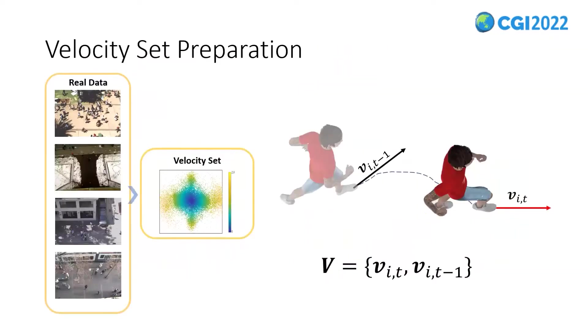From the real-world crowd trajectories, we calculate the velocity of each agent in each frame and obtain the velocity set V. In our experiments, the velocity set contains 61,995 individual velocities. In order to improve the search efficiency of our algorithm, we sort the set V in ascending order according to the value of velocity and divide it into 100 subsets.